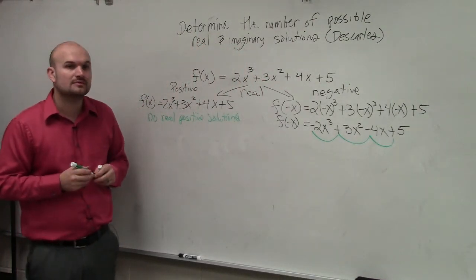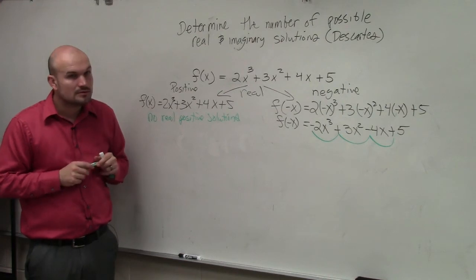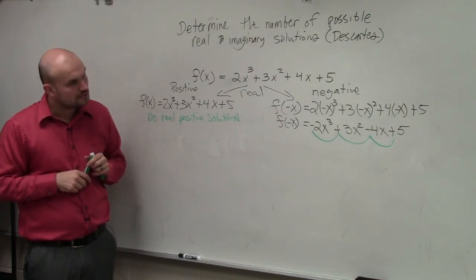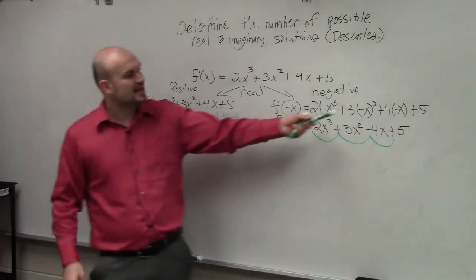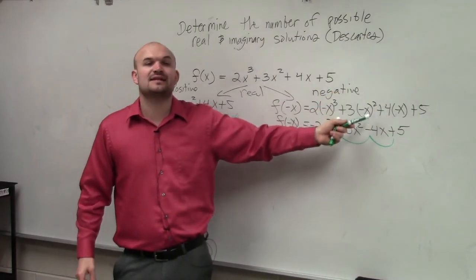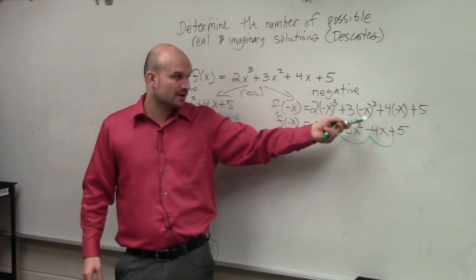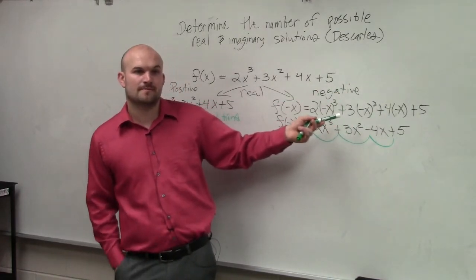Yes? The second one, three x squared times that's still positive. Okay, it's negative x squared. It's negative x times negative x, which is positive x squared, and then times three. Make sense? Yeah. Okay.